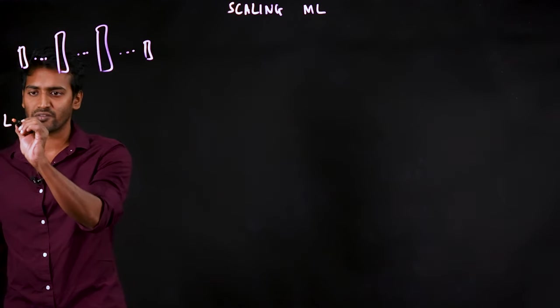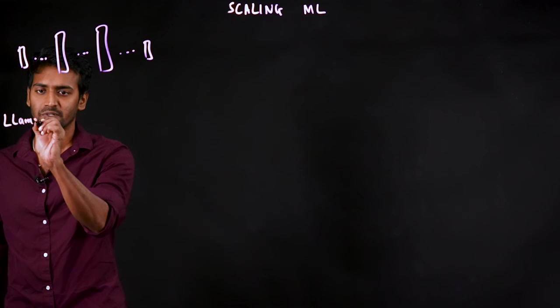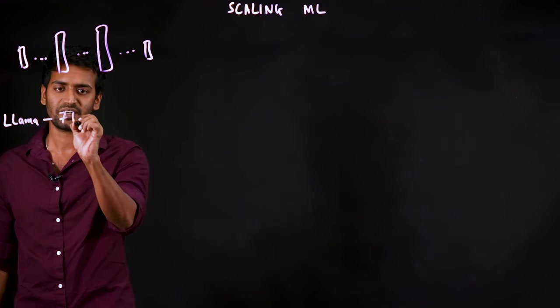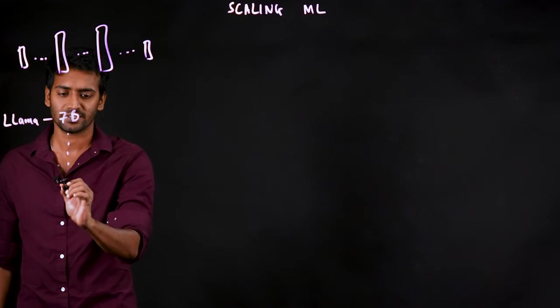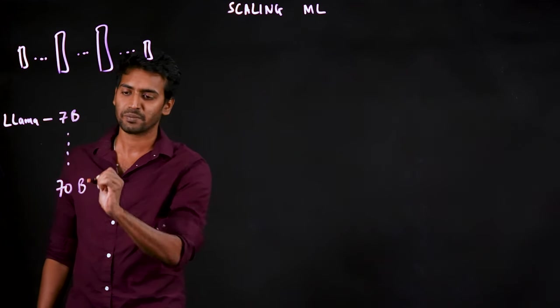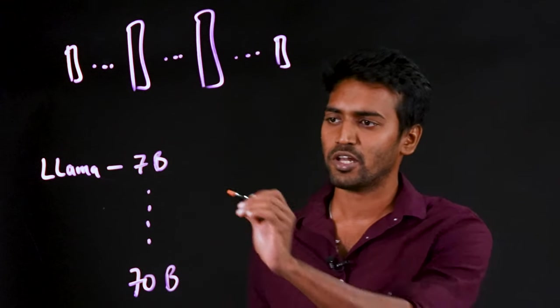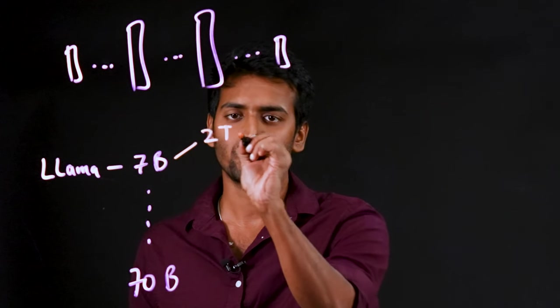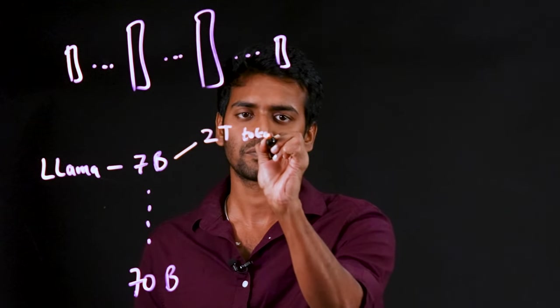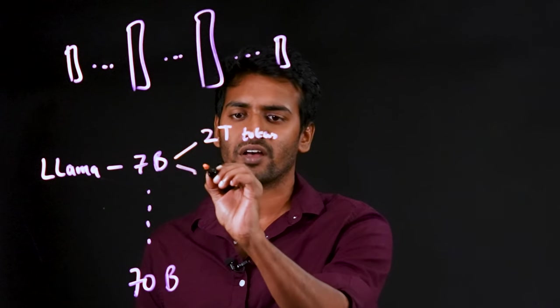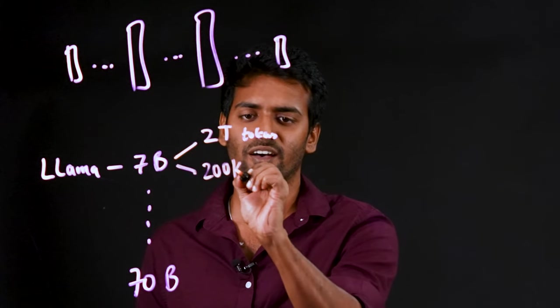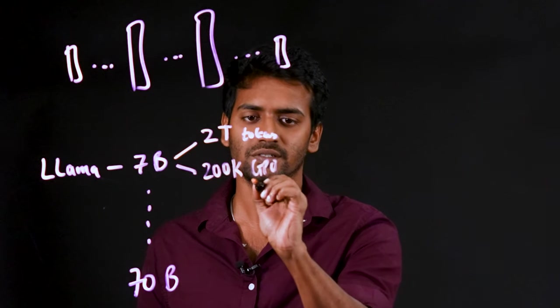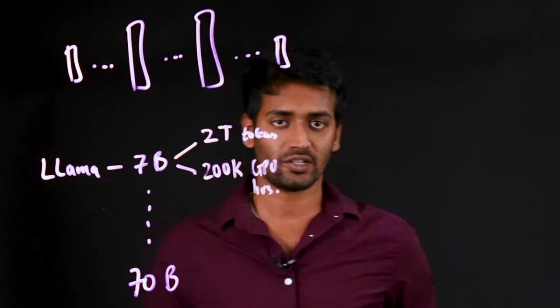Let's see the Lama model for example. It has four variants ranging from 7 billion parameters to 70 billion parameters. The smallest variant, 7 billion, was trained using 2 trillion tokens and it required around roughly 200,000 GPU-hours. That's a long time.